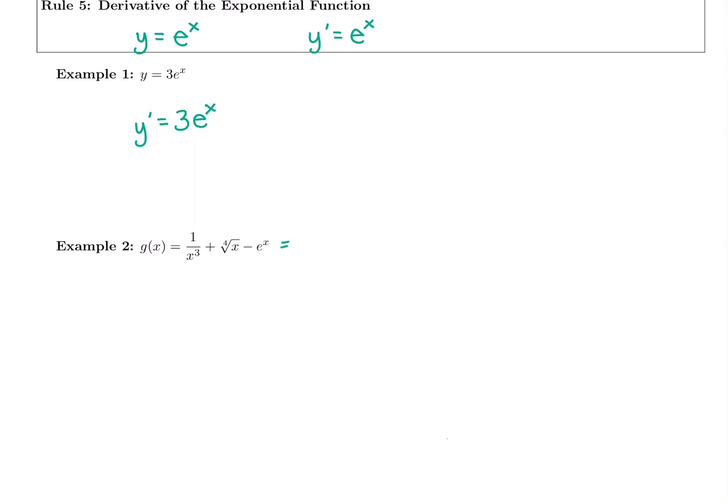Next one is a little bit harder because of algebra making it harder. First thing I need to rewrite, I see something in the denominator that tells me it's a negative exponent. So I have x to the negative 3 plus I have x under a fourth root. So that's the first power and fourth root minus e to the x.